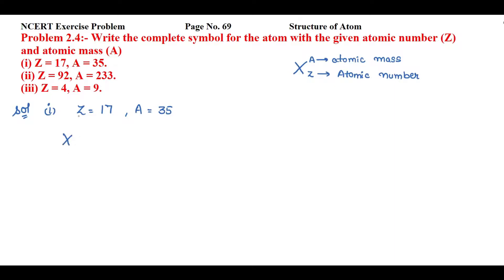Atomic number is 17 and atomic mass is 35. This atomic number will tell you about the number of electrons and number of protons present in a neutral atom. Atomic number 17 is of the element chlorine, so the complete formula is Cl with 17 as subscript and 35 as superscript.